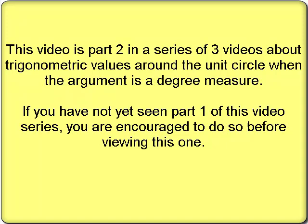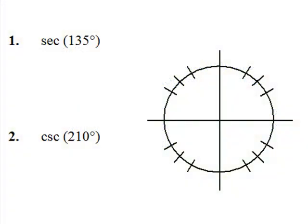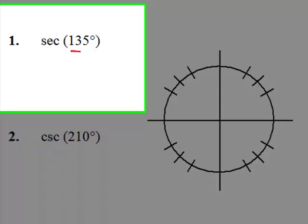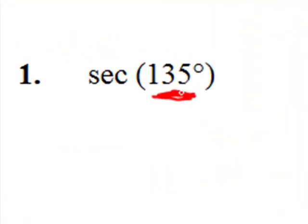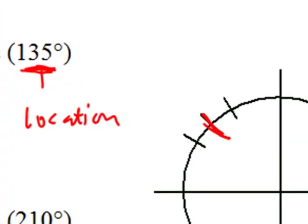The first thing we're going to do here is look at the secant of 135 degrees. Now, this argument right here, that 135 degrees, more than anything, it's all about the location. Because the location does a few things for us. Once we find 135 degrees, which is right here by the way,